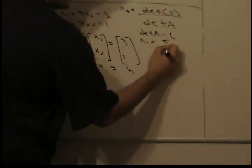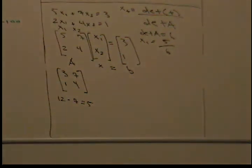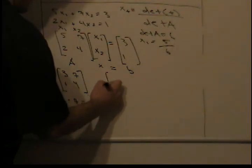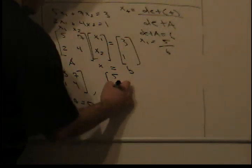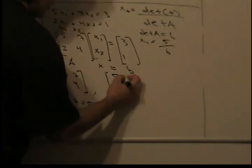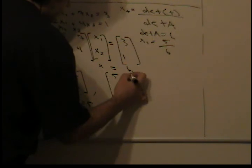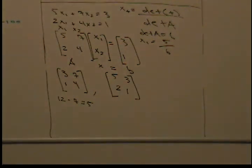Now we do the same thing for x2. So we have 5, 2, instead of 7, 4, we're going for 3, 1 now, because 7, 4 is the column for x2. We're going to replace that with our B, so we have that.